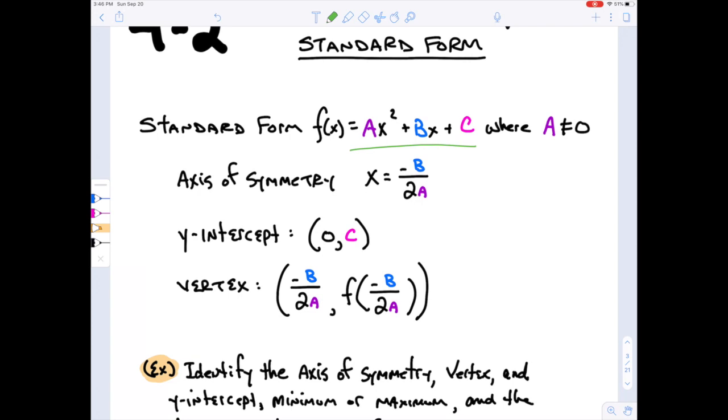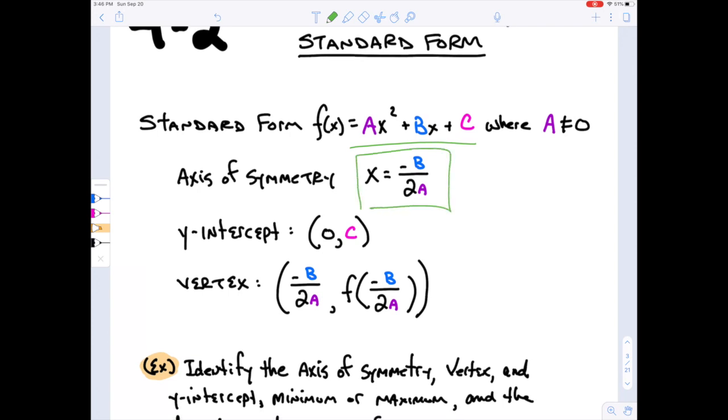We can pull that by using this formula, which is going to be super valuable. It's just the opposite of b, the b is this one, opposite of b over 2 times a, which is this one. So we just use those coefficients and we can identify what the axis of symmetry is.